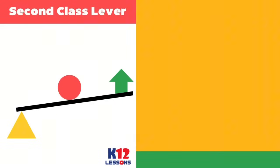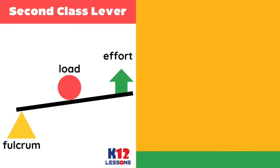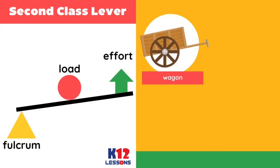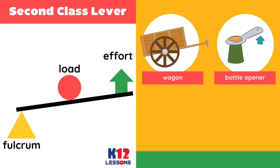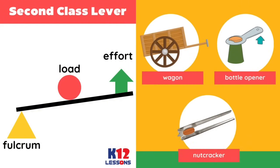Second class lever: the load is located between the fulcrum and the effort. Examples: wagon, bottle opener, and nutcracker.